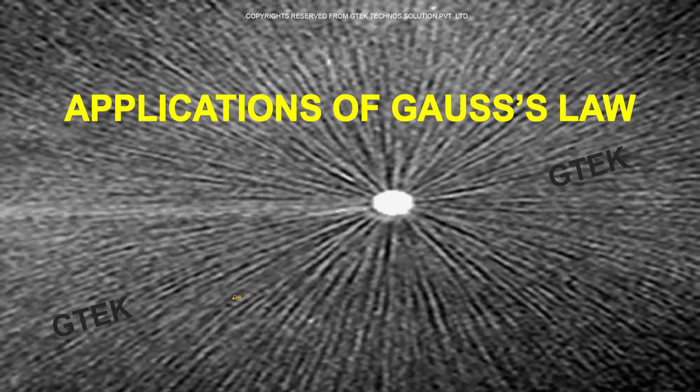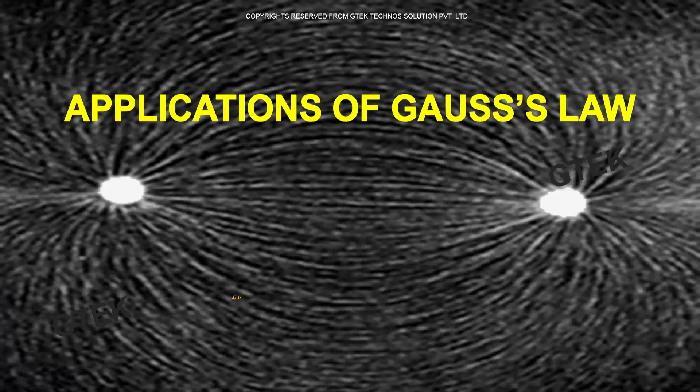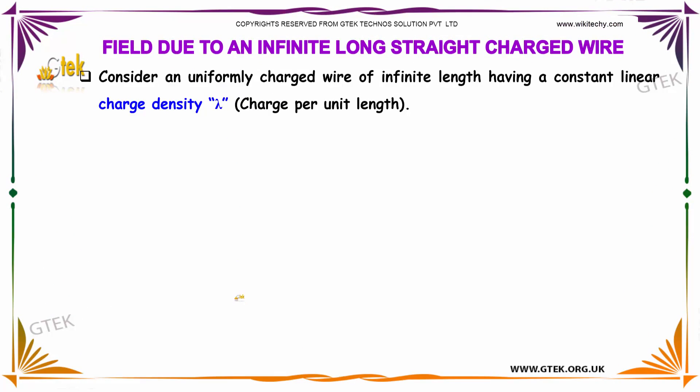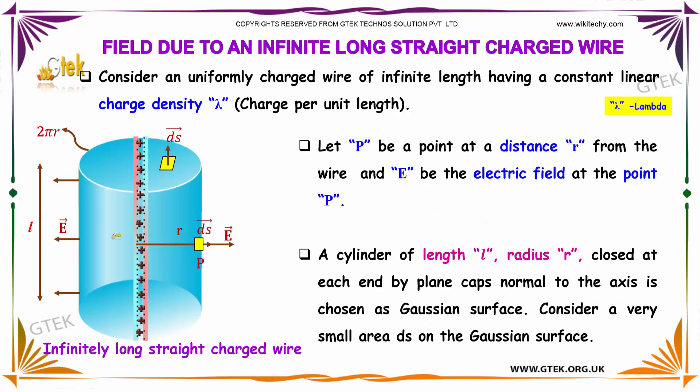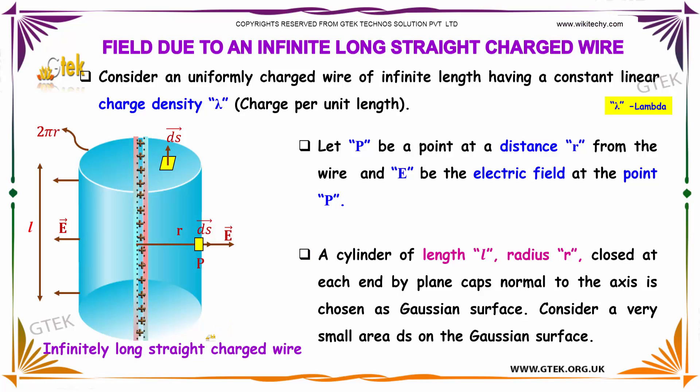Now let's move on to the concept of applications of Gauss law. Under this, let's find out about the field due to an infinitely long straight charged wire. For this, let us consider a uniformly charged wire of infinite length having a constant linear charge density λ (lambda), which is charge per unit length.